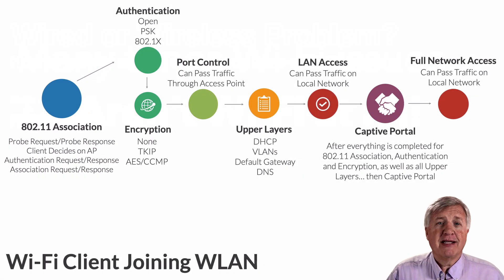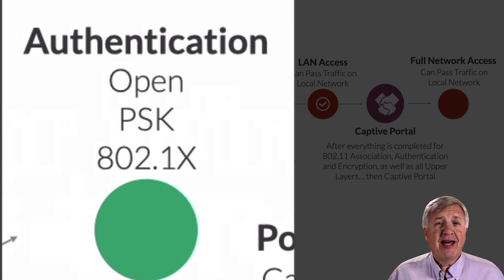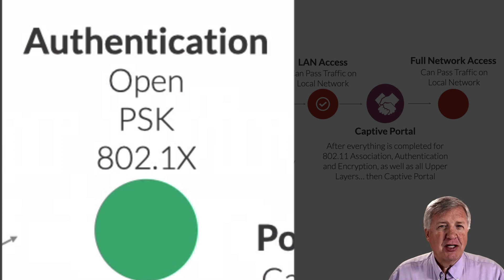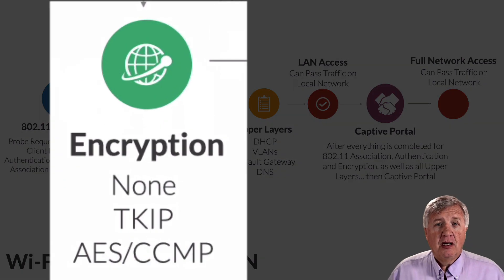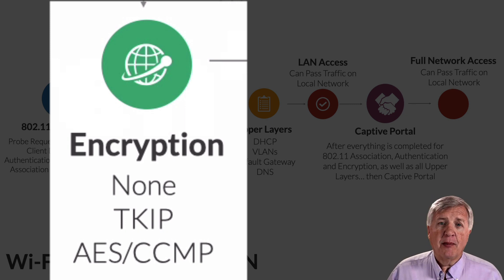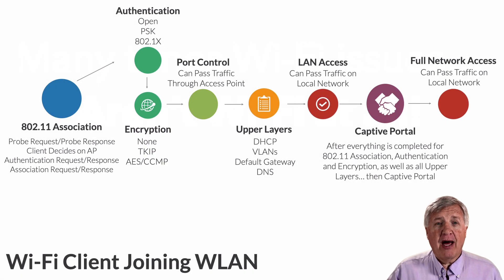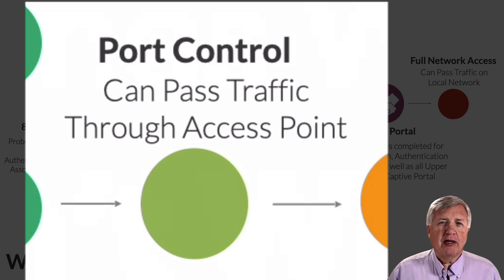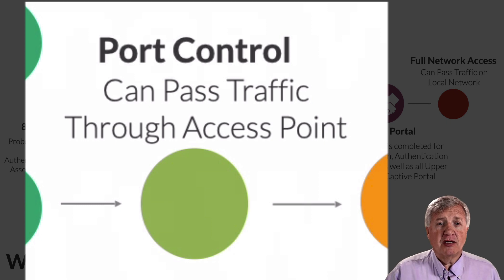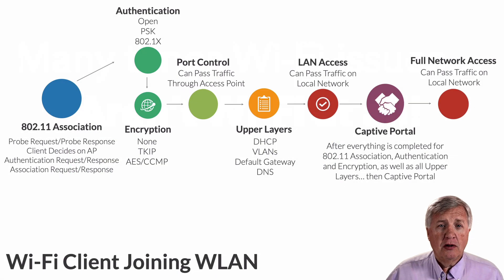In that 802.11 part, the client is making all these decisions. And then depending on the SSID you have — open, PSK, or 802.1X — there's another authentication process. As shown in this slide, it's a separate bubble. Post-authentication, there may or may not be some form of encryption: none, TKIP (hopefully no TKIP), or 802.1X. After that is cleared, there's port control, meaning the AP is controlling the port and won't let the client device out the wired side of the AP. If authentication and encryption are passed, you can now pass traffic through the AP over onto the wired network.